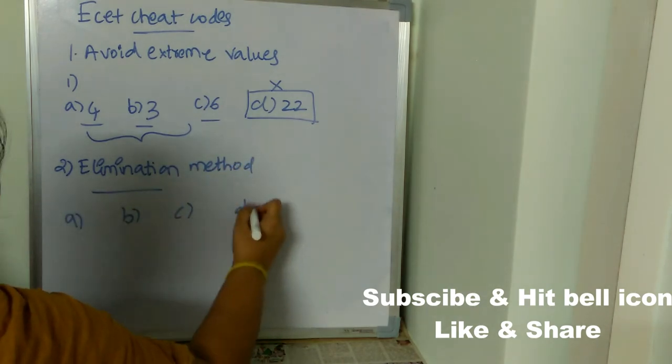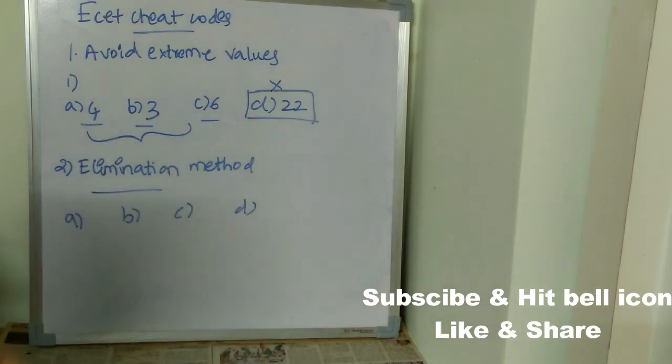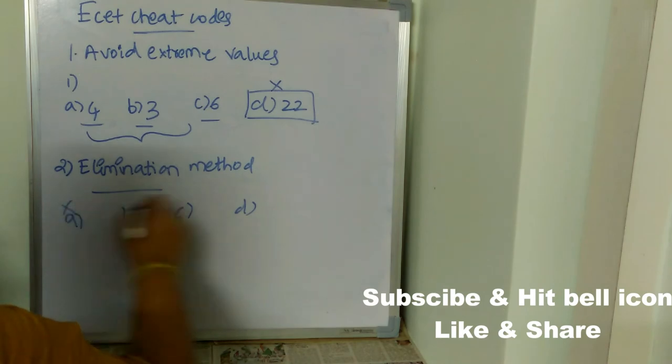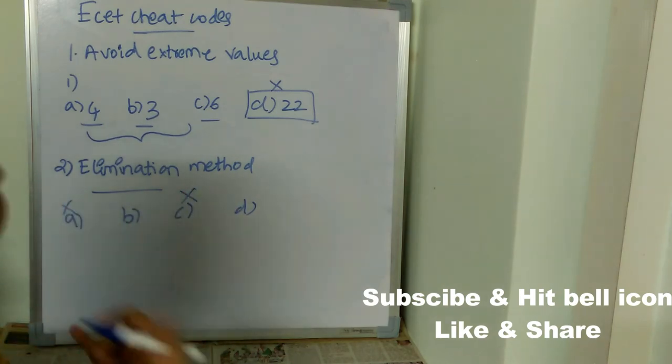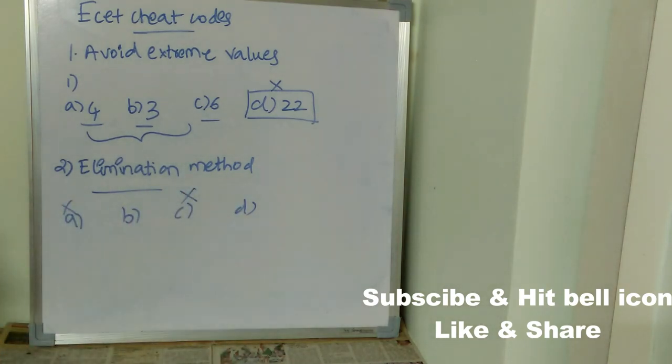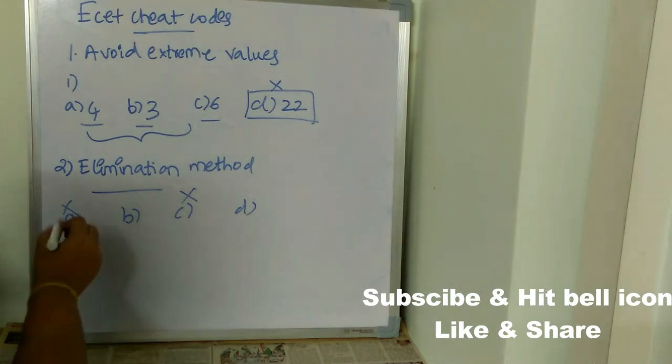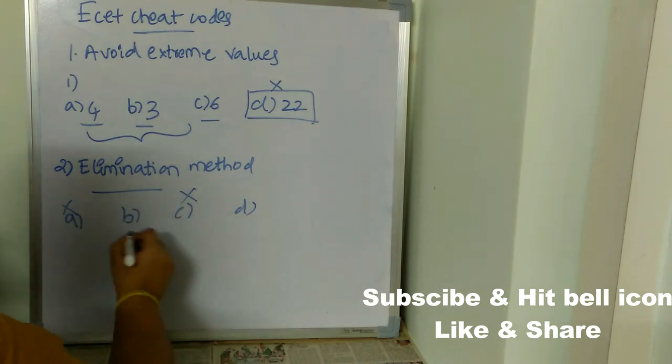Try to eliminate two irrelevant options using the concept which you know related to that question. Use your concept and use your common sense and make sure you eliminate at least two of the options. Out of the rest of the options, one you can just put as your answer if you don't know the correct answer.